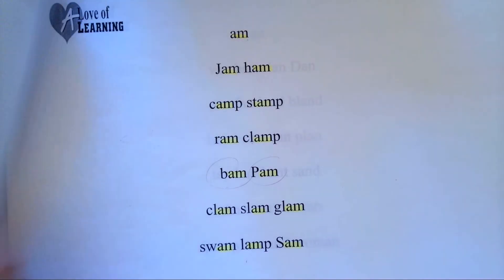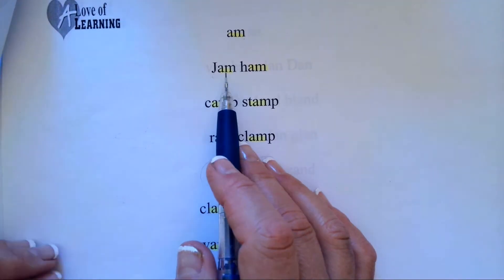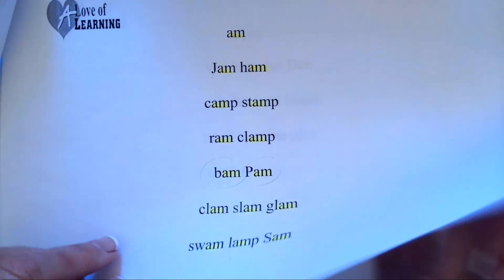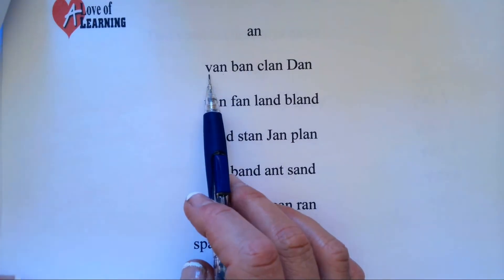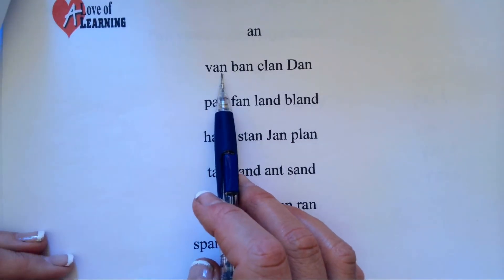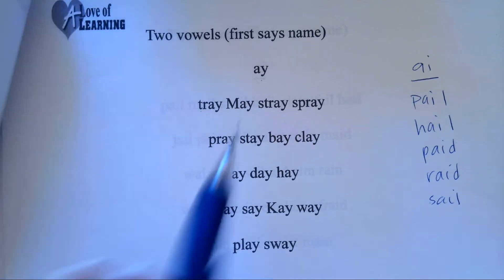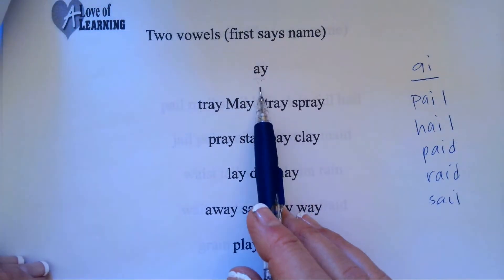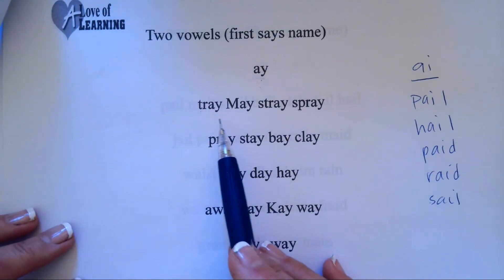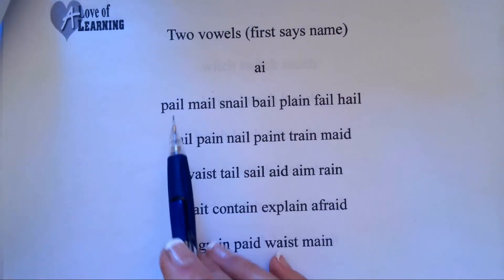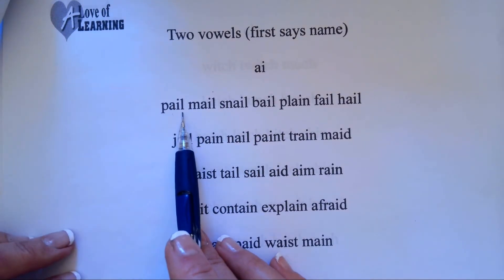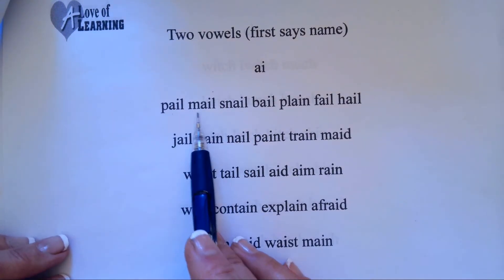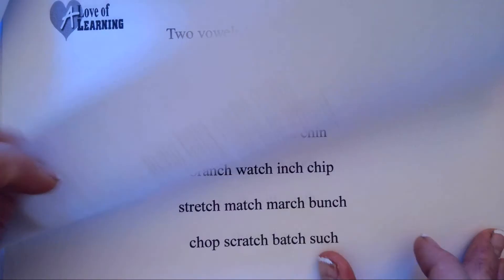A-M makes am. J-A-M, jam. A-N makes an. V-A-N, van. A-Y makes a. T-R-A-Y, tray. A-I makes a. P-A-L-E, pale. M-A-L-E, male.